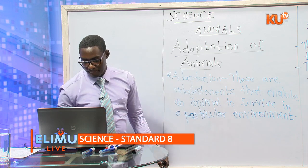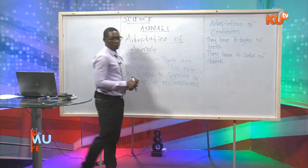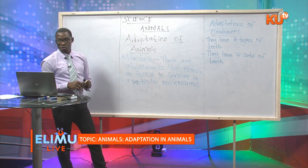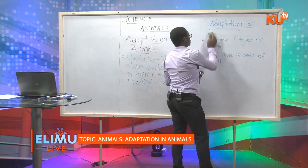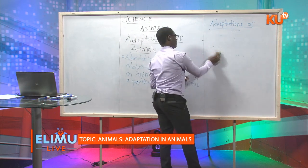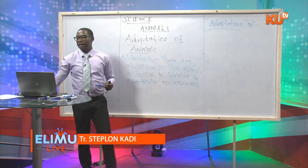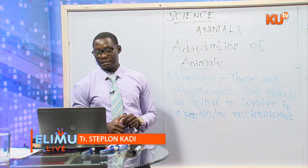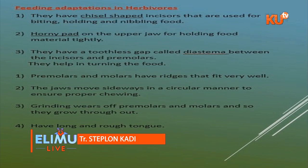Now we come to adaptations of herbivorous animals. This point will focus a lot because examiners set many questions on adaptations of herbivorous animals. Herbivorous animals feed on vegetable matter only — plants. They have chisel-shaped incisors.